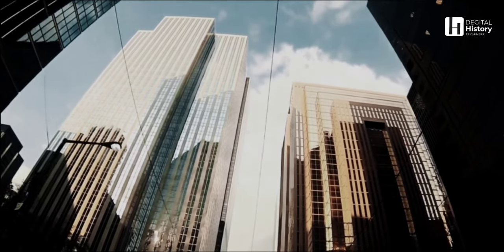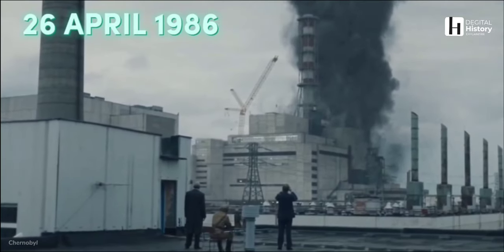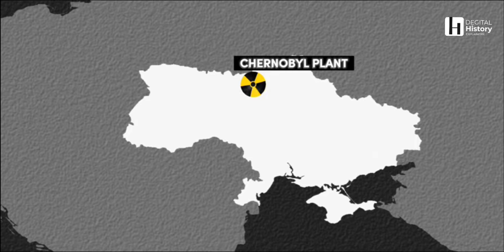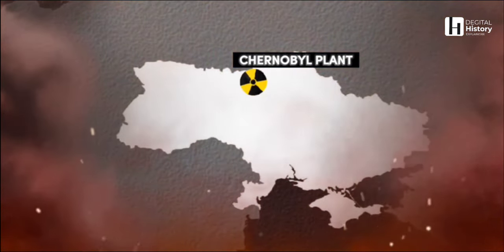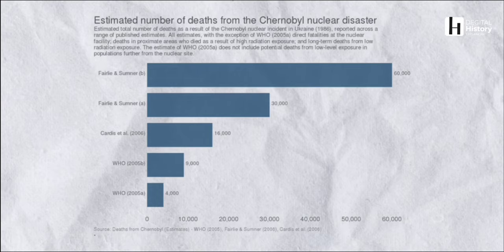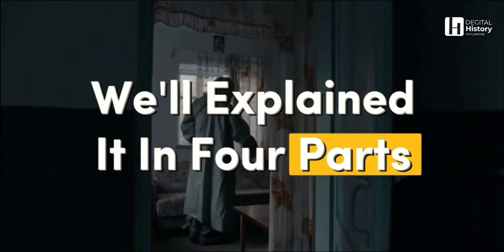Welcome to our YouTube channel. Today, we'll be discussing the Chernobyl disaster. The Chernobyl disaster is one of the most catastrophic nuclear accidents in human history. It occurred on April 26, 1986, at the Chernobyl nuclear power plant in the north of Ukraine. The explosion and the following radioactive fallout not only caused environmental damage, but also resulted in numerous casualties and affected the health of thousands of people. In this video, we will explain it in four parts.